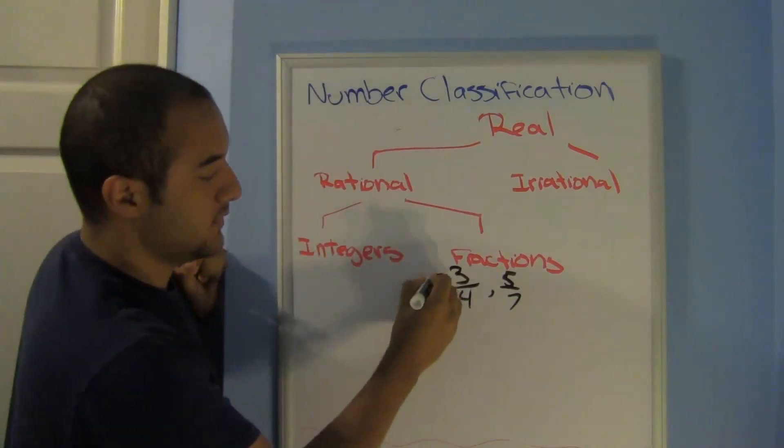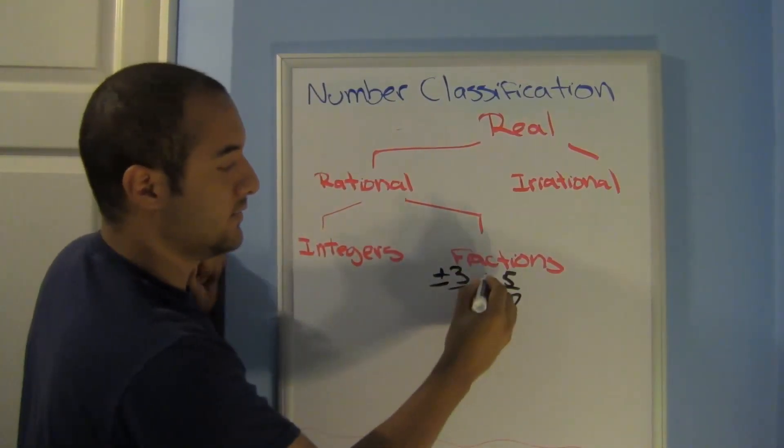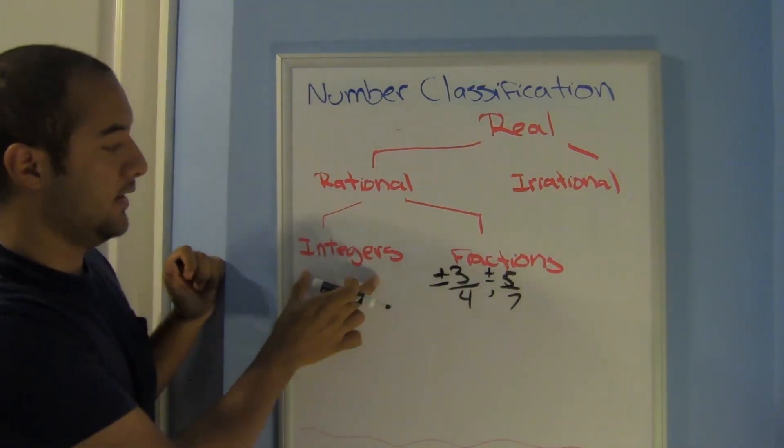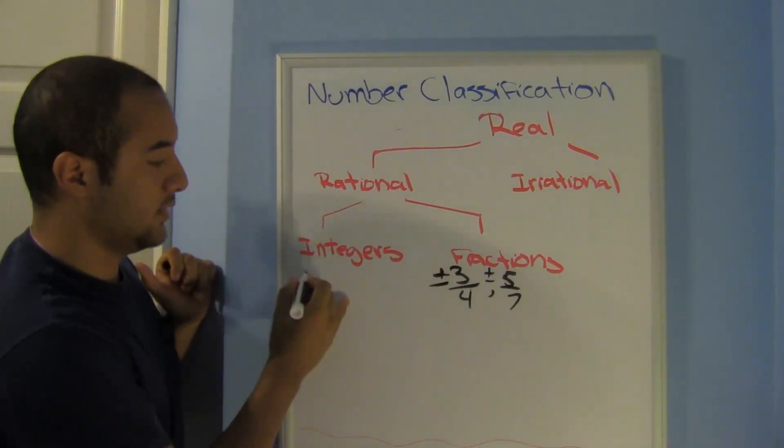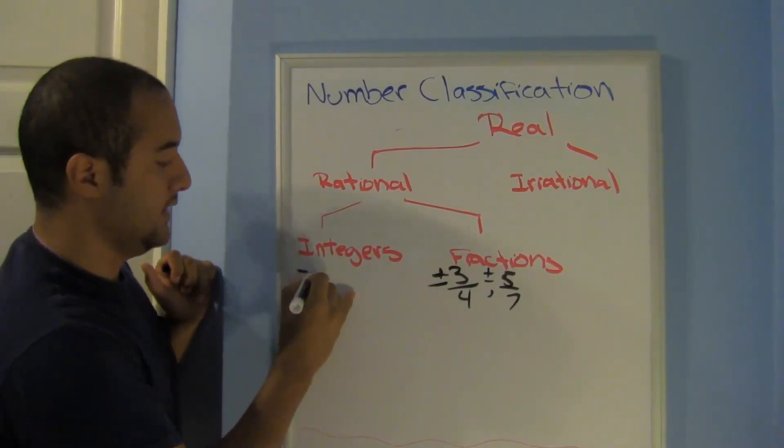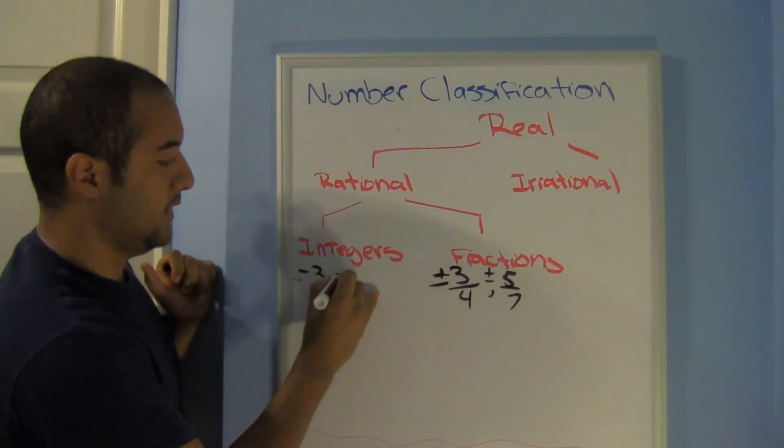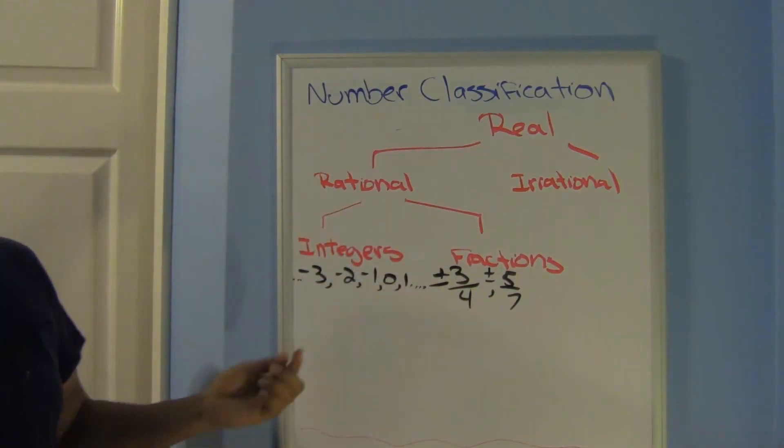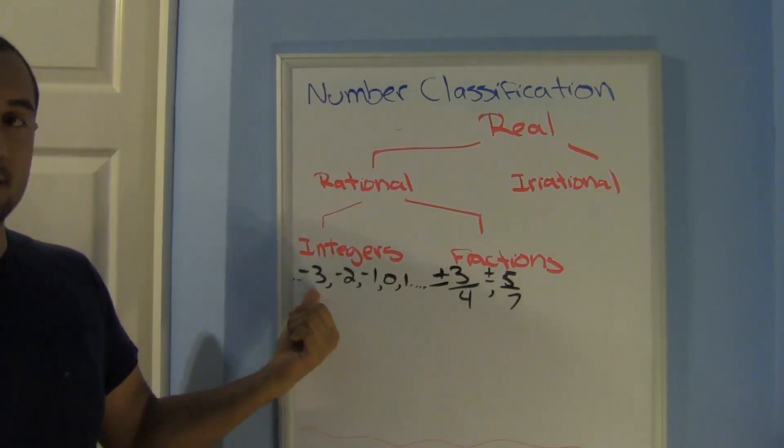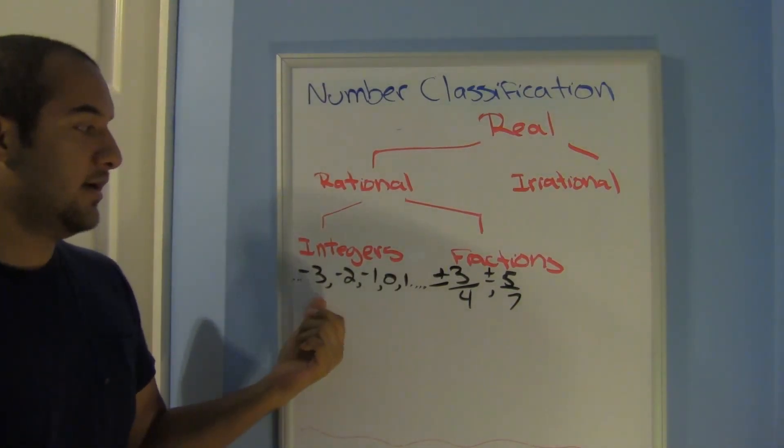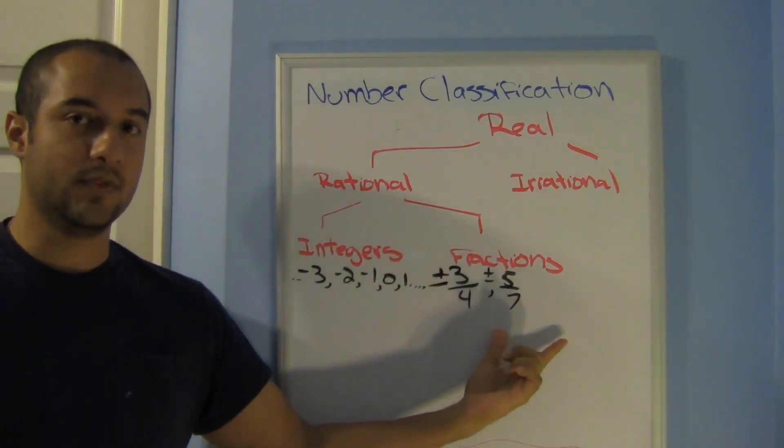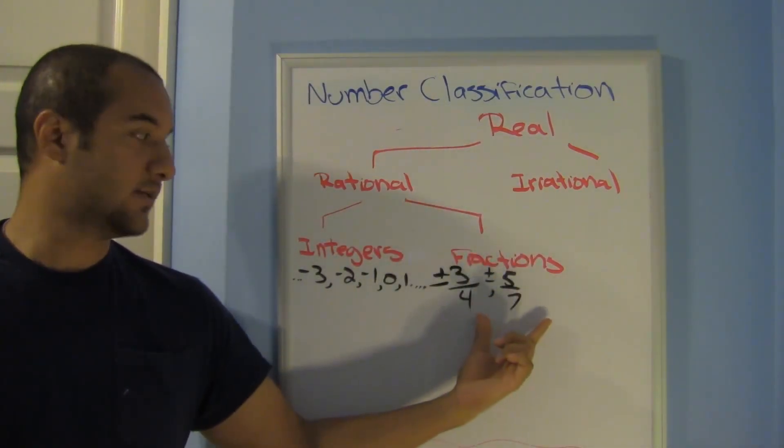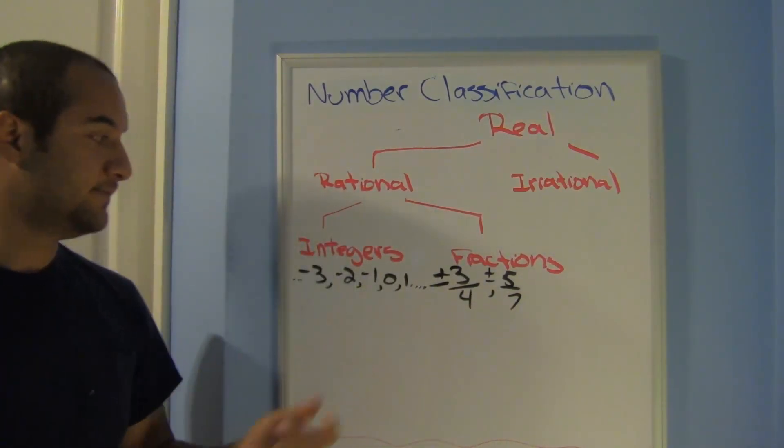Now, still including positives or negatives. Integers, those are your counting numbers. So let's say negative 3, negative 2, negative 1, 0, 1, and so on. Now, yes, you can write these as fractions. But anything that's just over 1 won't count when you're classifying the numbers. You'll just say that it's an integer.